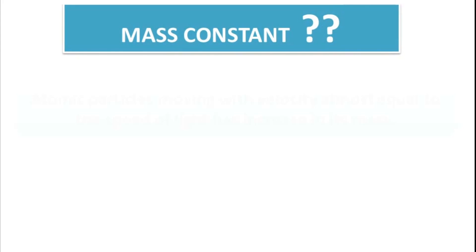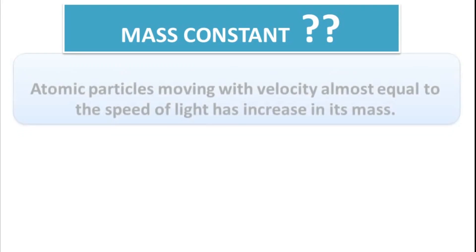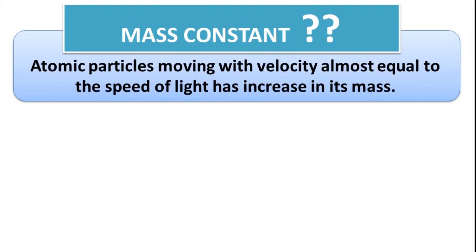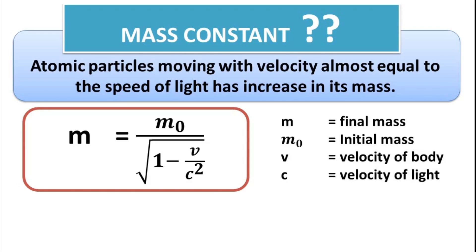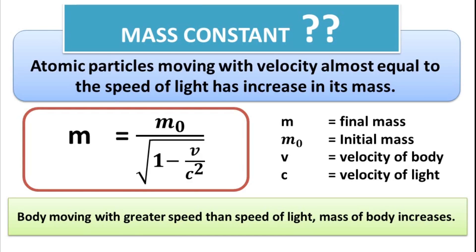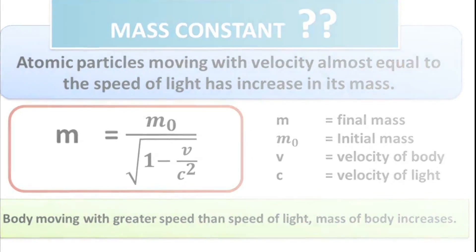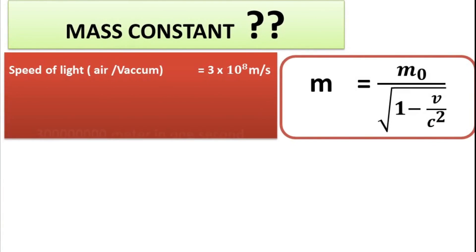Mass changes for a moving body. Yes, you heard it right. Scientists have observed that mass of atomic particles that are moving with velocity almost equal to the speed of light has increase in its mass. Scientists have derived a formula. M is equal to M not divided by under root 1 minus V divided by C square. Where M is final mass, M not is the initial mass, V is velocity of body and C is the velocity of light. For a body moving with a greater speed than the speed of light, mass of body increases. We know speed of light is 3 into 10 raise to power 8 meter per second in vacuum or in air. Or 30 crore meter in 1 seconds. Or 3 lakh kilometer in 1 seconds.